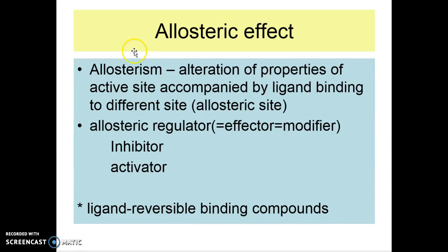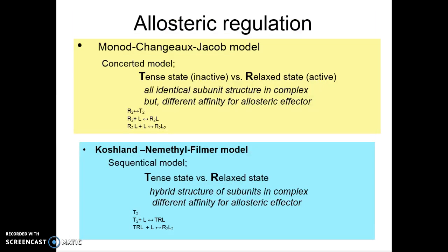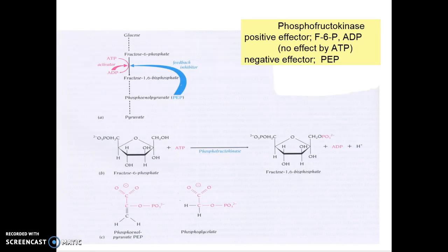Next topic is about allosteric effect at the molecular level that could be explained by two models. Phosphofructokinase in glycolysis is regulated allosterically. Positive effectors are fructose-6-phosphate and ADP. Negative effector is PEP.